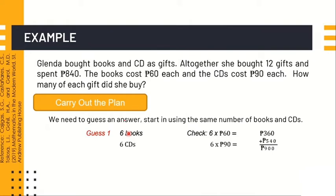The third step using the Polya problem solving method: carry out the plan. It involves the solution to the problem. For Guess 1, we need to guess an answer. Let's start by using the same number of books and CDs — altogether is 12 — so 6 books and 6 CDs. Let's try: 6 books times 60 pesos each gives 360 pesos.